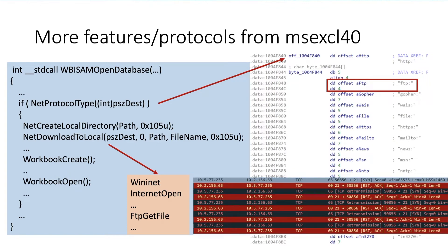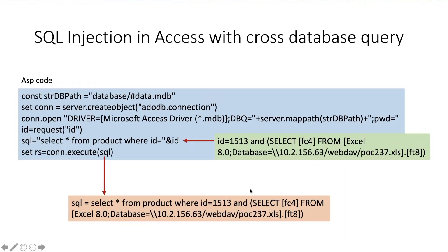WebDAV and SMB are not the whole story. There's another feature in MS Excel 4.0 — a net protocol type function. It will check if the input is an FTP protocol. If yes, it will call a netDownloadToLocal function to download the remote database file from the FTP server. This function calls APIs in WinInet to communicate with the remote FTP server. You can see IIS and SQL Server connect on port 21 with FTP protocol.